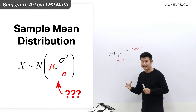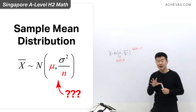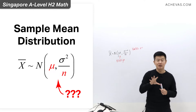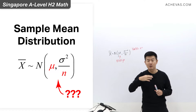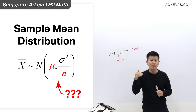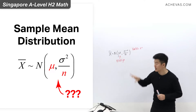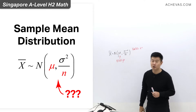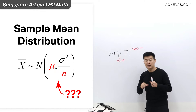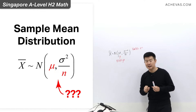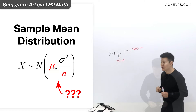And what exactly is this n? The best way to understand this is to go back and revisit the derivation of the sample mean distribution. Let's try to get that done in this video.